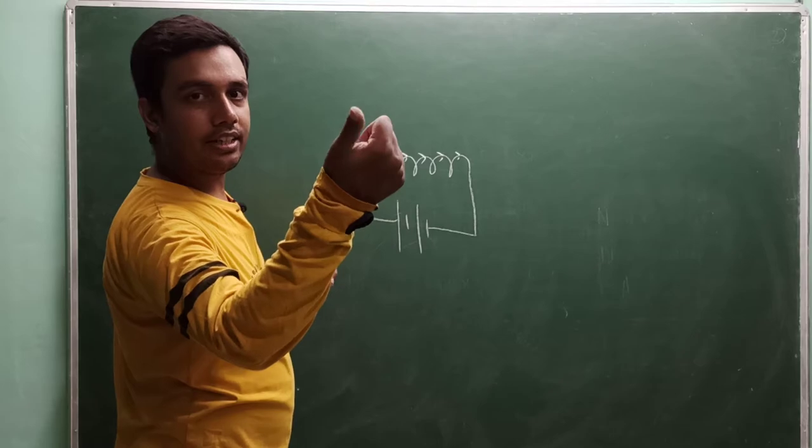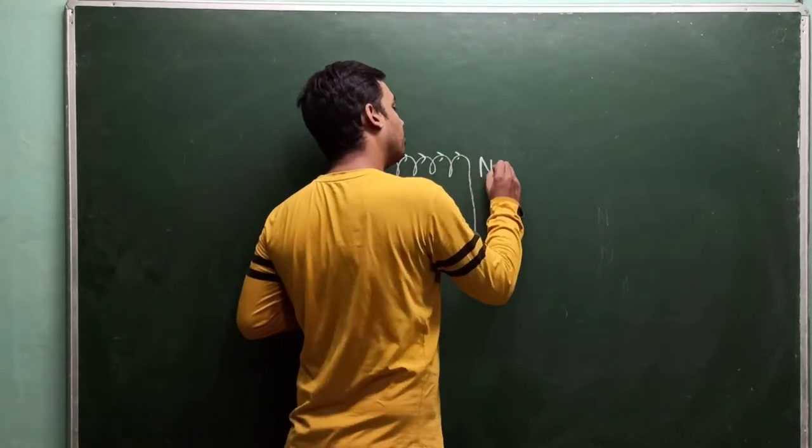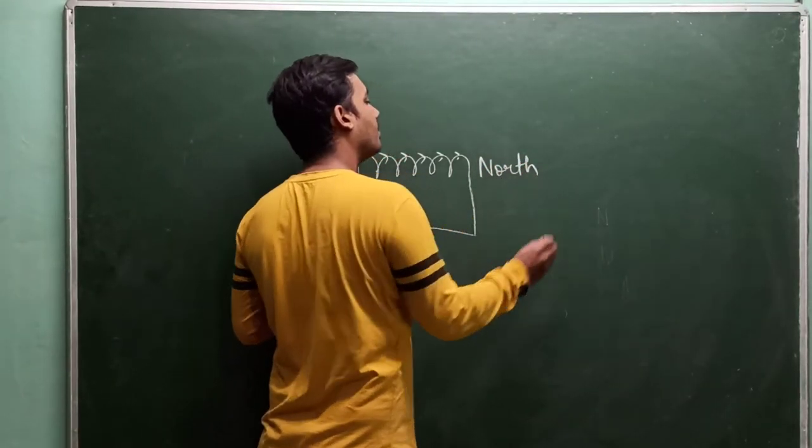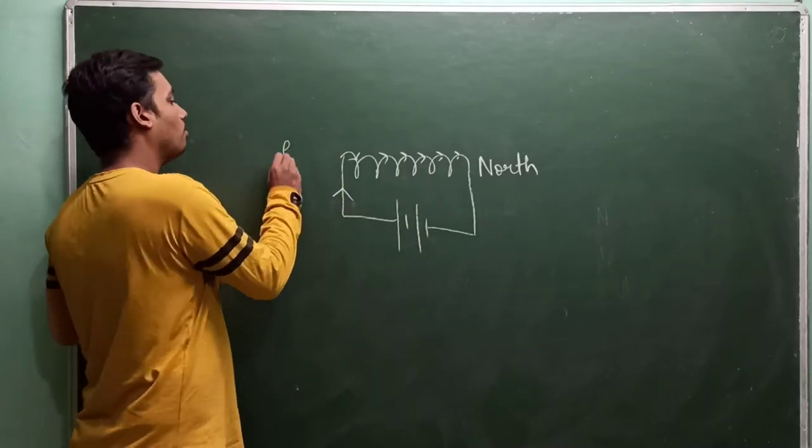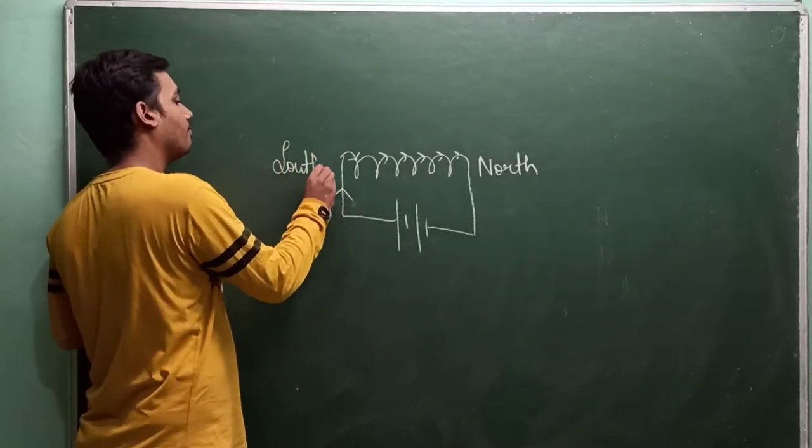So wherever you point the thumb is north pole, and the opposite pole is south pole. Simple.